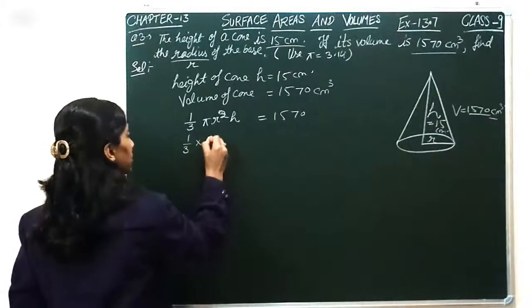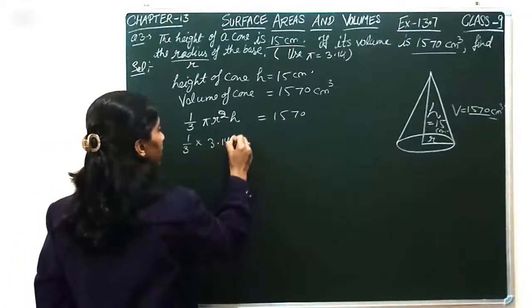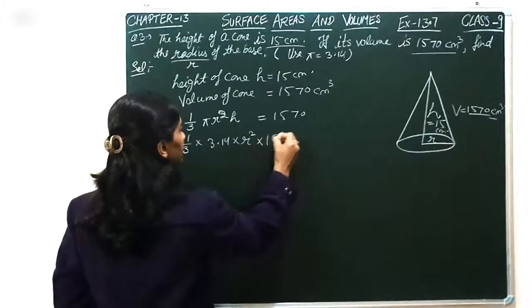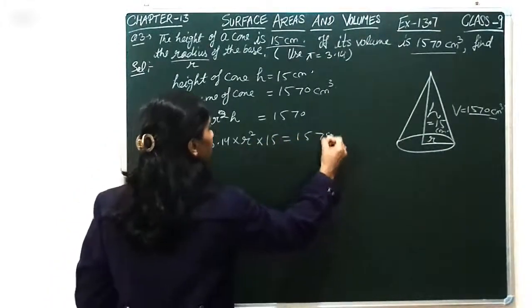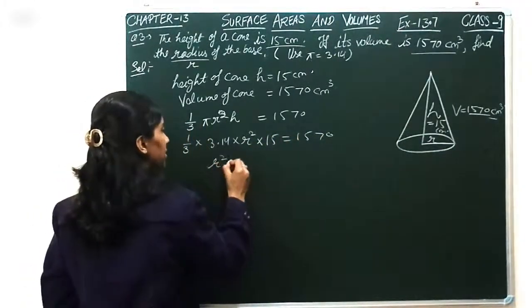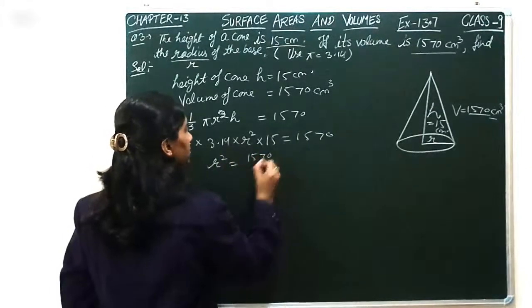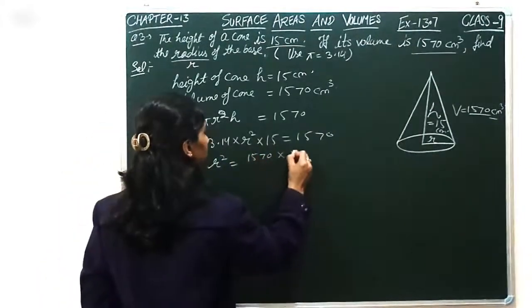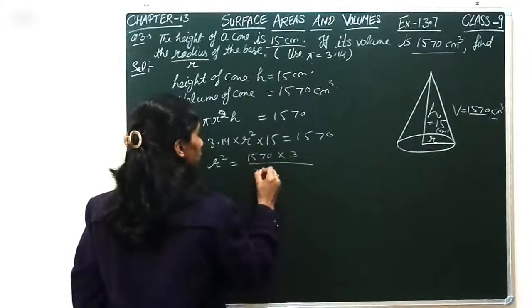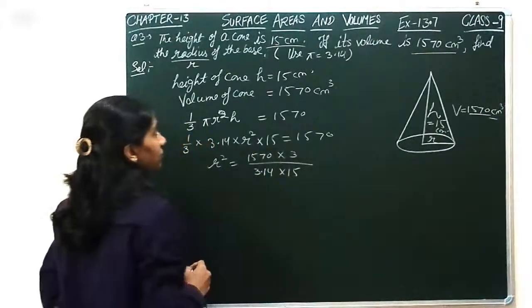This value is 1570. So here we all put values here. This is pi ki value. And r ki value, this is 15. r square h. How much can we do here? 1570 into 3 upon 3.14 into 15.